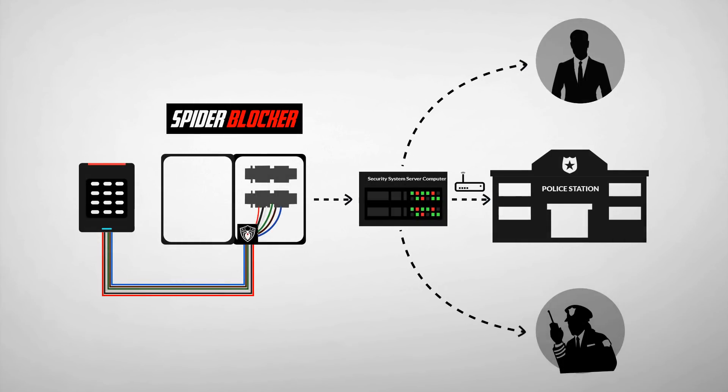We also integrated an output that can be used to signal your security system. Use it to dispatch local police or to send emails or text messages at the first sign of card reader hacking.